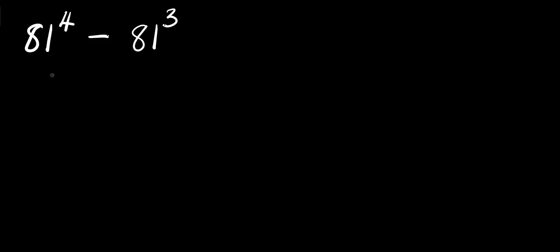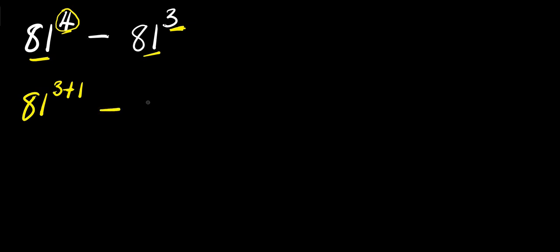Hello, how to evaluate this without our calculator — this is 81 to the power of 4 minus 81 to the power of 3. I'm going to express this as a summation of 3 and 1, because we have 3 here already. So I have 81 to the power of 3 plus 1 — this 3 plus 1 is 4 — then we have minus 81 to the power of 3.